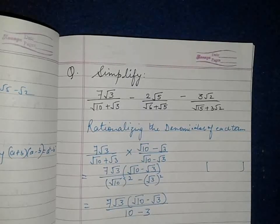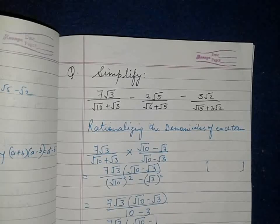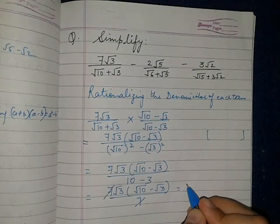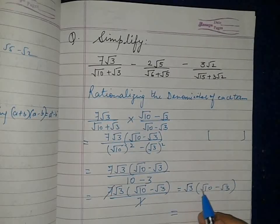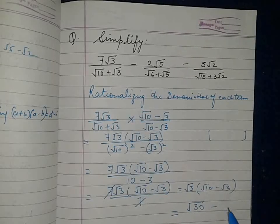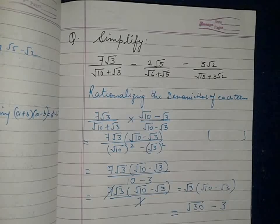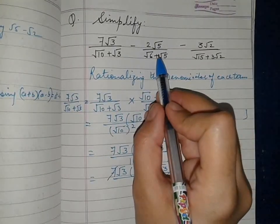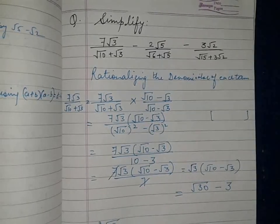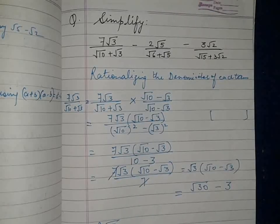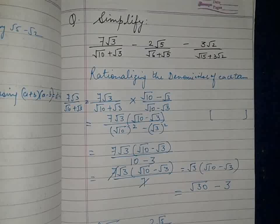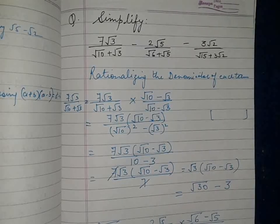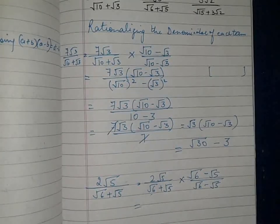The 7s cancel, leaving √3(√10 − √3) = √30 − √3 × √3 = √30 − 3. So from the first term we get (√30 − 3). For the second term, the rationalizing factor is (√6 − √5) because the denominator has a plus sign. Show all the steps yourself — do not write the answer directly. When you rationalize, the answer for the second term will be (2√30 − 10).